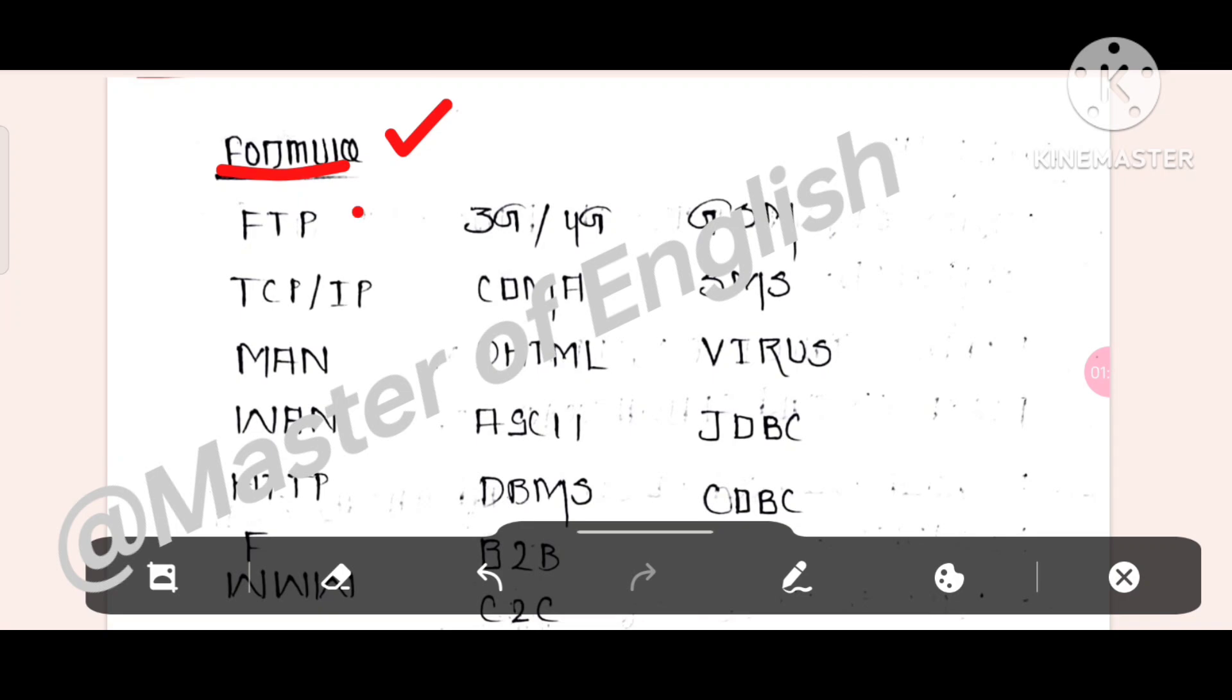Important abbreviations: FTP, 3G, 4G, GSM, TCP, IP, comma, SMS, MAN, DHTML, virus, WAN, then JDBC.